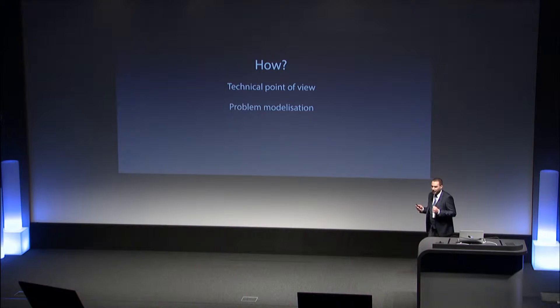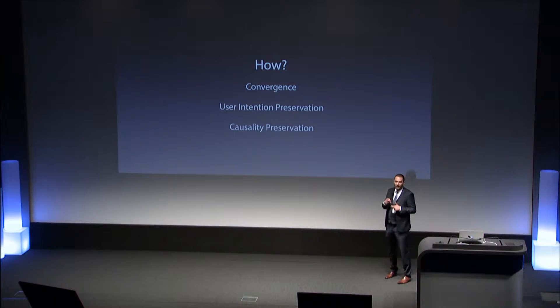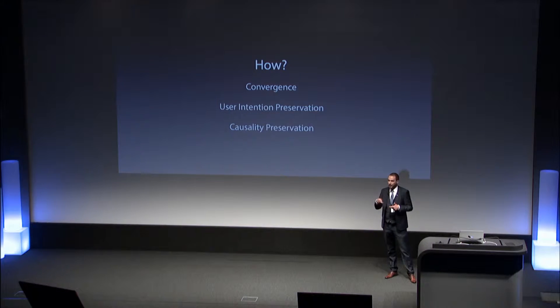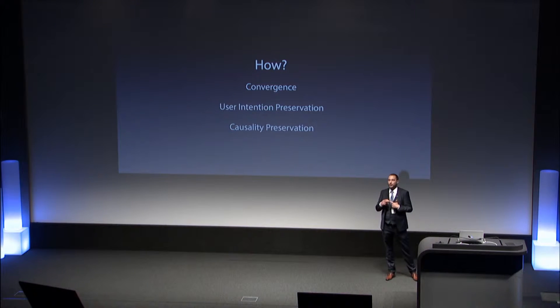We are going to say that the model needs to meet three properties, and we will see each of them in turn: convergence, user intention preservation, and finally causality preservation.